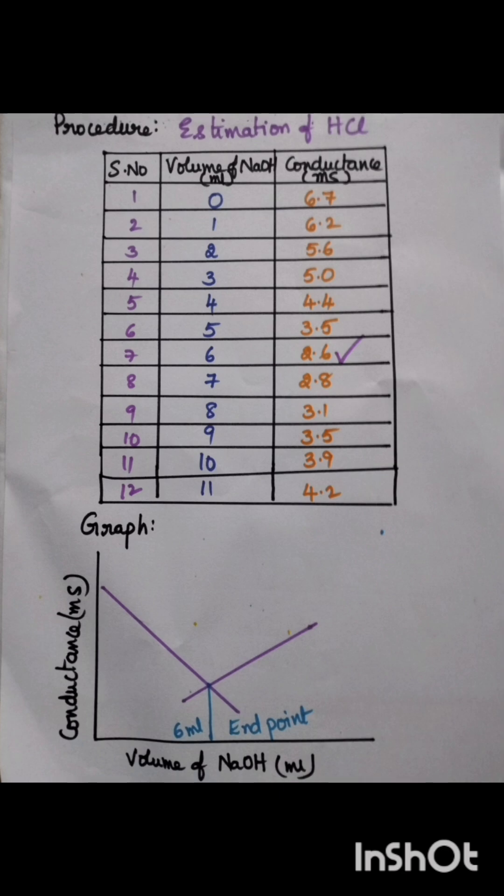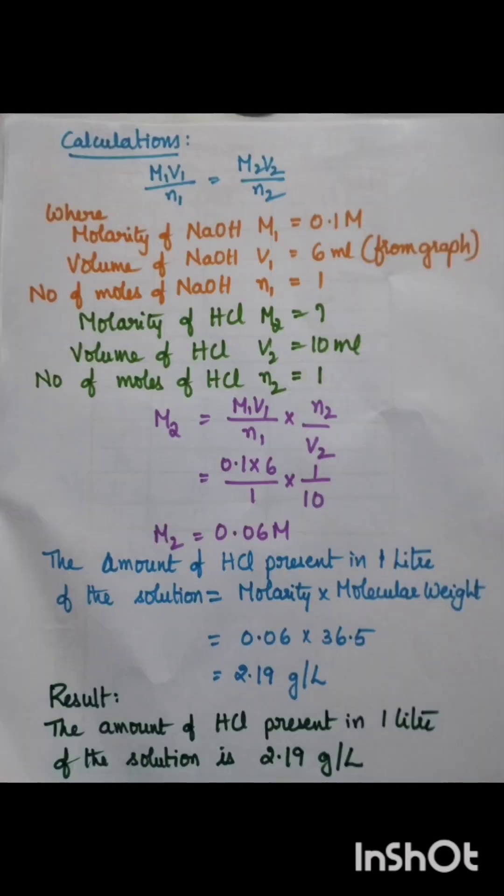Generally we use the formula M1V1/N1 = M2V2/N2. Here, molarity of NaOH is M1, volume of NaOH V1, number of moles of NaOH N1, molarity of HCl M2, volume of HCl V2, number of moles of HCl N2. So M2 = M1V1/N1 × N2/V2. On substituting the values, the molarity of HCl is determined.